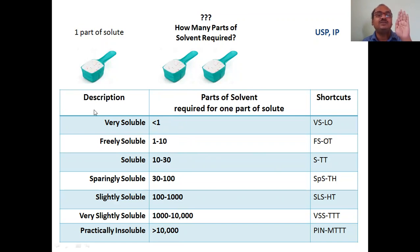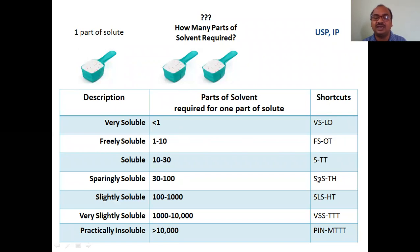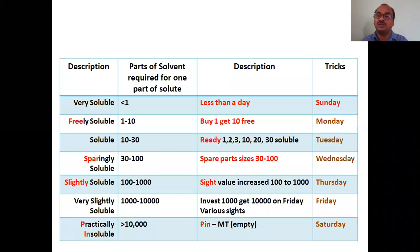They will give a description like 'very soluble' and you have to state how much solvent is required. There are shortcuts you can use. Very soluble (VS): less than 1. Freely soluble: 1 to 10. Soluble: 10 to 30. Be careful not to confuse sparingly soluble and slightly soluble. Sparingly soluble (SP): 30 to 100. Slightly soluble (SL): 100 to 1000. The concept is complete; if you want tricks, continue the video.